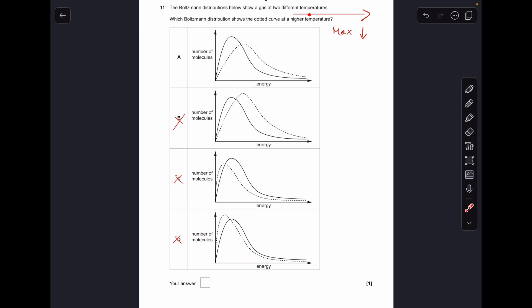Number eleven: when you increase the temperature, the Boltzmann curve shifts to the right to the high energy and also the maximum drops, so A is the right answer.